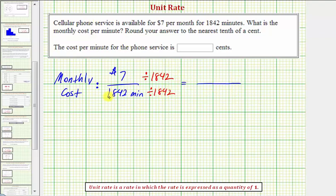Notice in our denominator, we have 1,842 divided by 1,842, which will leave us with one minute. And now we'll find this quotient here to determine the cost per minute.